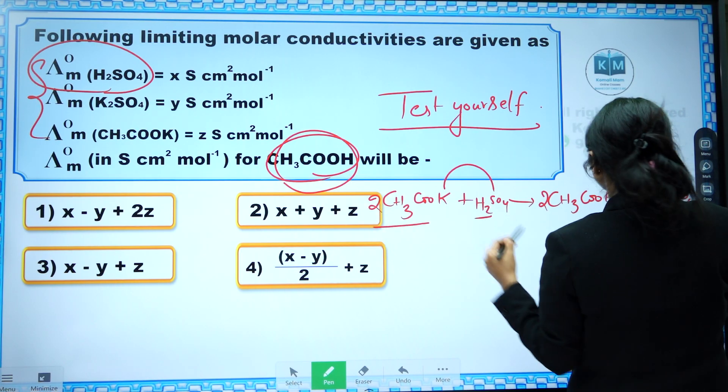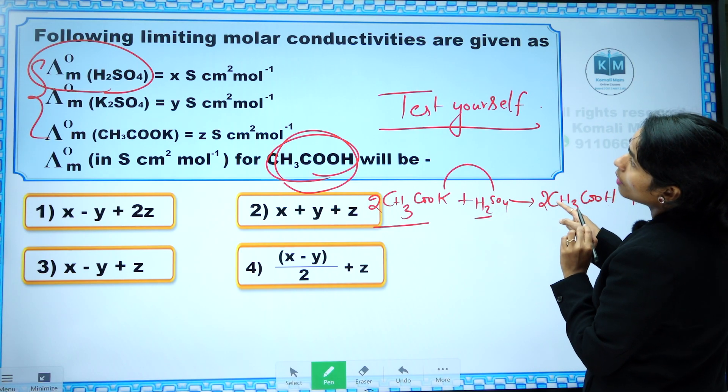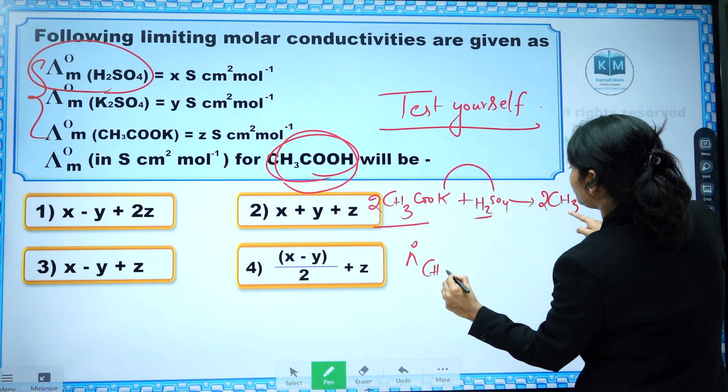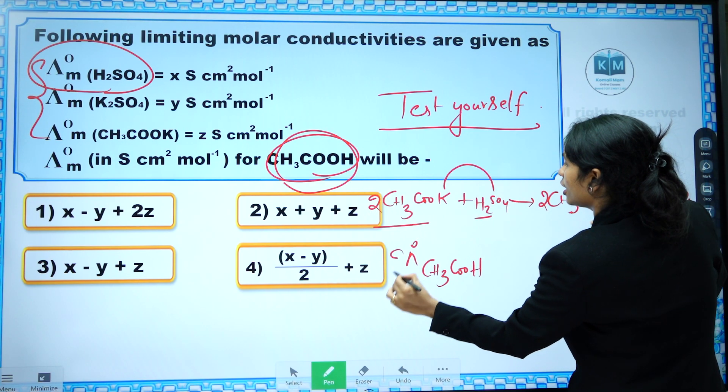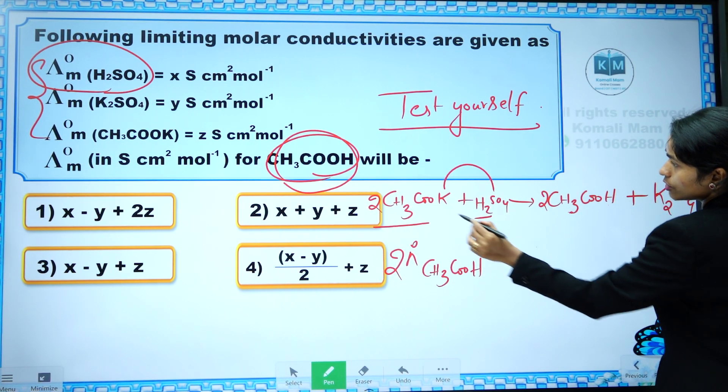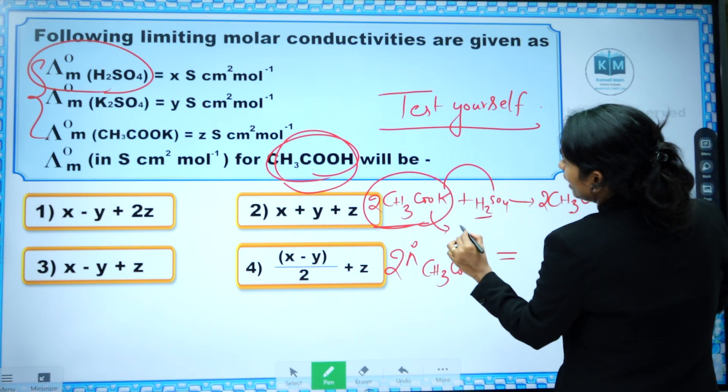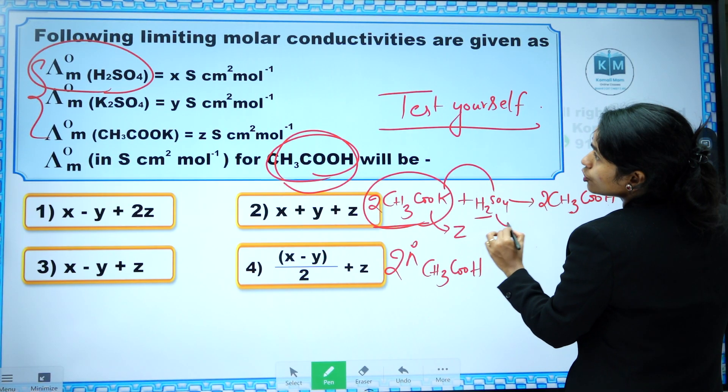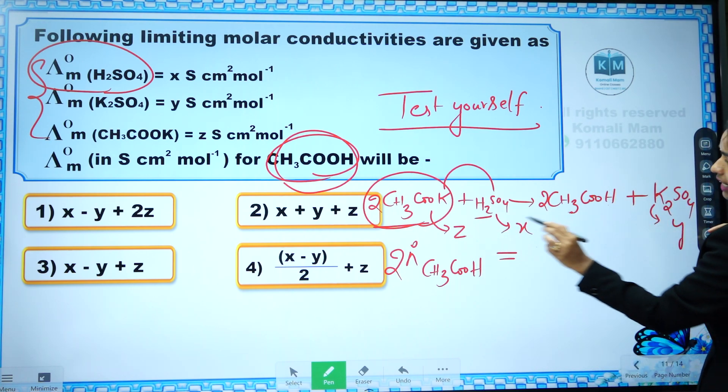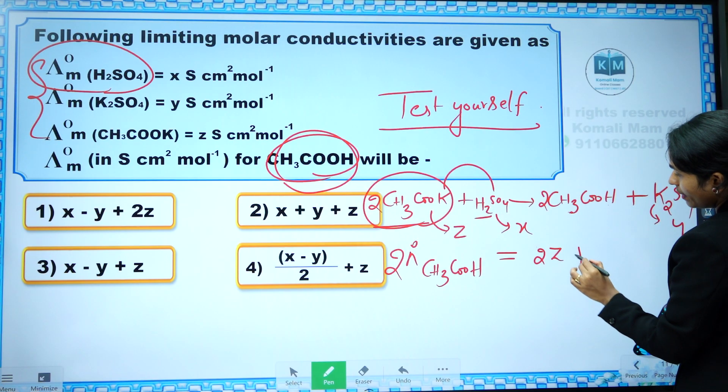Okay, now we want the molar conductivities of which one? Acetic acid. How many ions are there? Two. Which is equal to how many potassium ions are there? This ions are there, let us see what are the data given for this is z, right? This is z, and H2SO4 is x and K2SO4 is y.